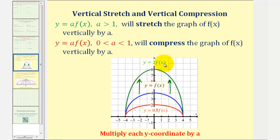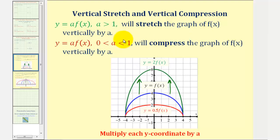The reason it's vertically stretched is because, in order to find the corresponding points on two times f of x, we multiply each y coordinate of the basic function f of x by a, or in this case two. So because we're multiplying each y coordinate by two, we say this graph would be stretched vertically by two. Notice how the function values of f of x go from zero to four, but the function values of two times f of x go from zero to eight.